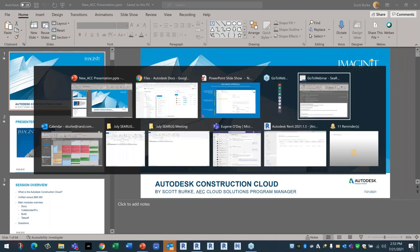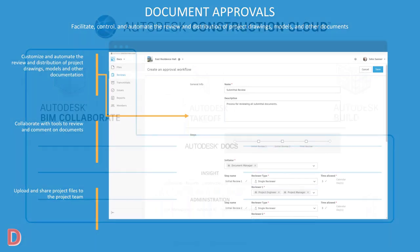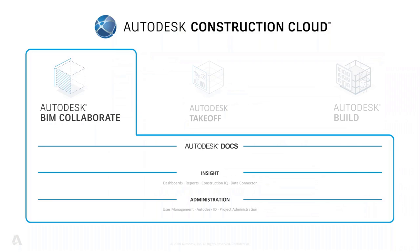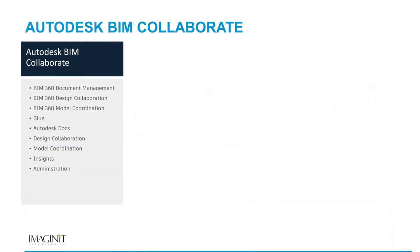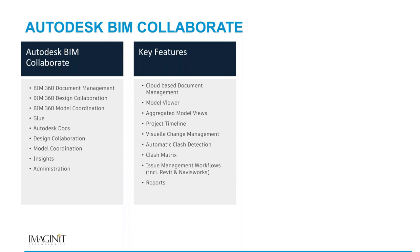Now let's look at the Collaborate tools — BIM Collaborate and BIM Collaborate Pro. BIM Collaborate has essentially taken the place of model coordination that used to be purchased separately. BIM Collaborate includes model coordination, it includes Docs, but it also includes visibility into the package release tool that BIM Collaborate Pro uses. So a project manager who doesn't need Collaborate Pro — because he's not editing a Revit model — gets the model viewer, aggregated model views, the project timeline, visual change management, automatic clash detection, issue management including Revit and Navisworks, and reports. All of that is built into Collaborate.